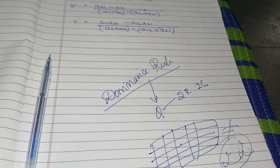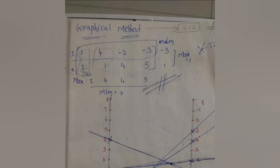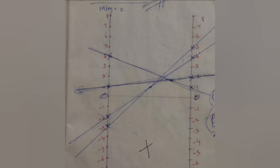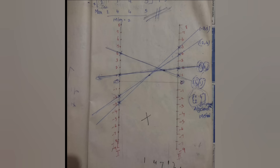Now let me explain the graphical method. You use graphical method when the question has either two rows or two columns. In this example question there are two rows and four columns, and there is no saddle point, so we can use the graphical method. First take a graph, draw a middle line - positive values on one side, negative values on the other, with zero in the middle.